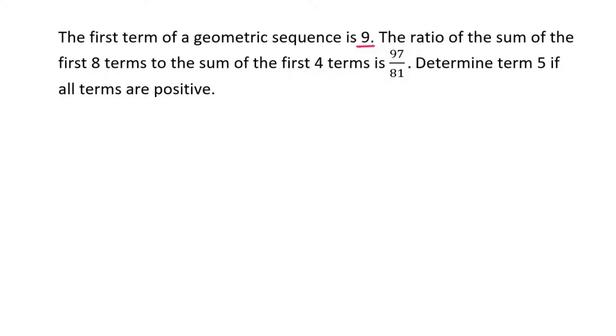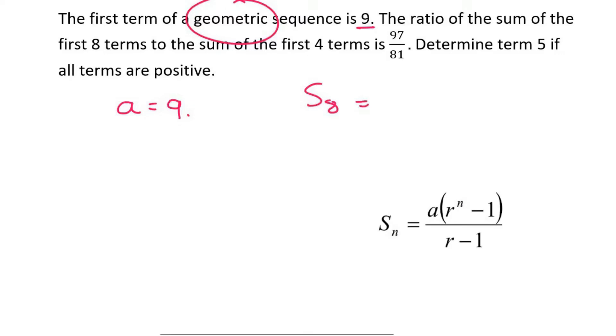This is quite an interesting one. Well, they tell us that the first term is 9, so we know that A is 9. Then they tell us that the ratio of the sum of the first 8 terms, so let's find the sum of the first 8 terms. We know that it's geometric, and we know that A is 9, so we can say 9.